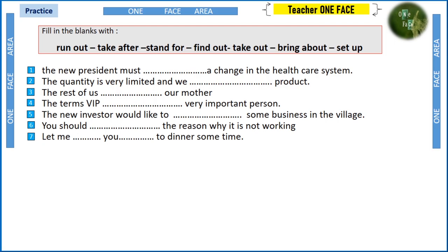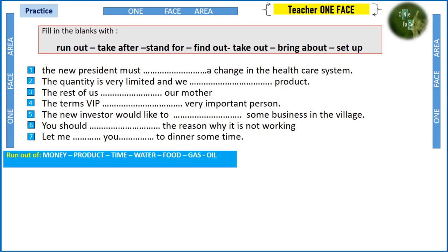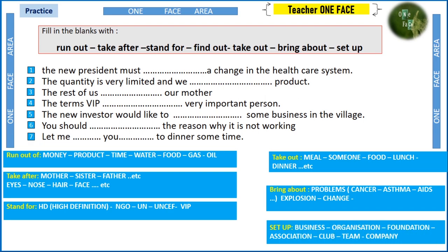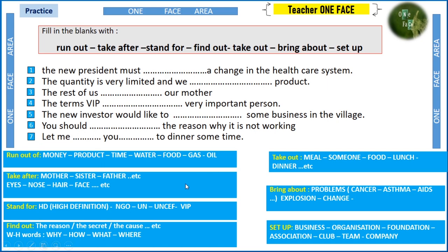Let's go through the answers. Quick reminder of collocations: run out goes with money, time, food, gas, oil. Number one: 'The new resident must bring about a change in the healthcare system.' The keyword here is 'change,' which signals bring about. Number two has 'product' as a keyword, and product goes with run out.